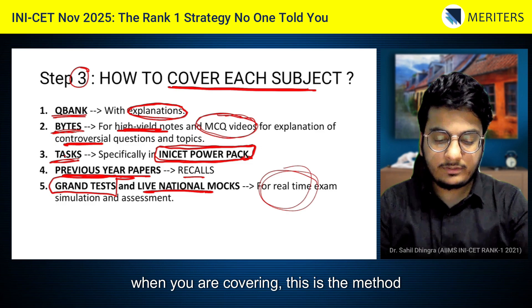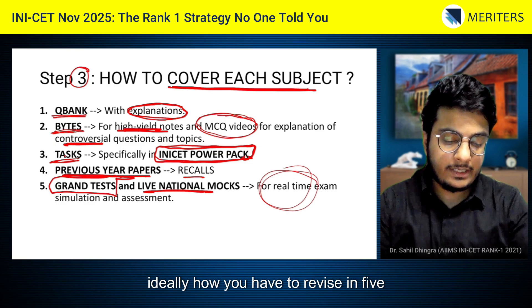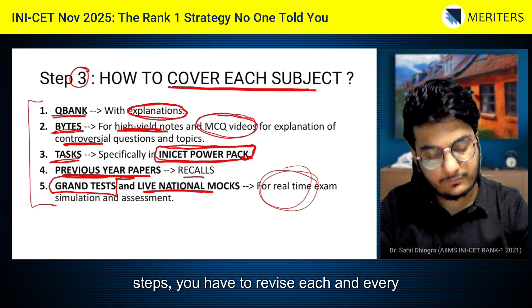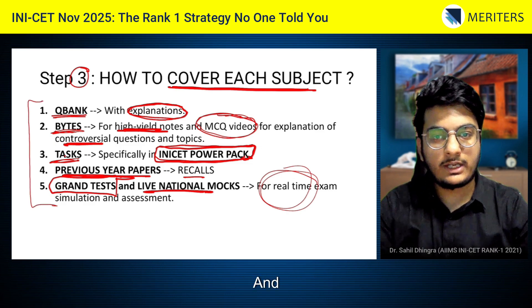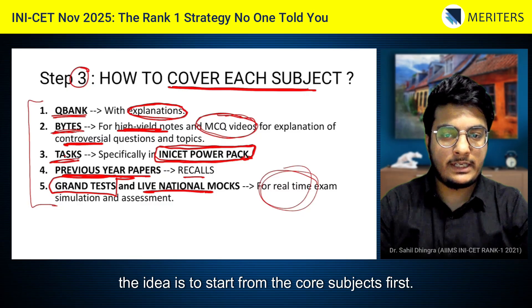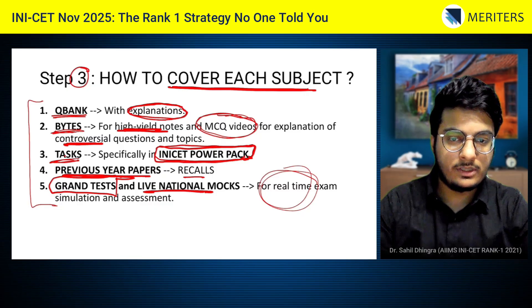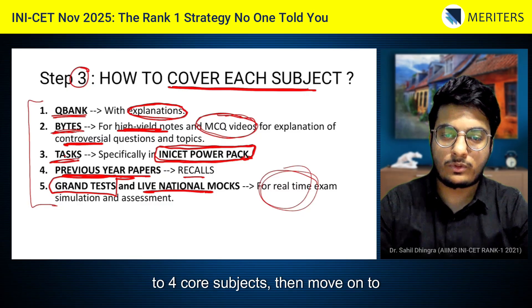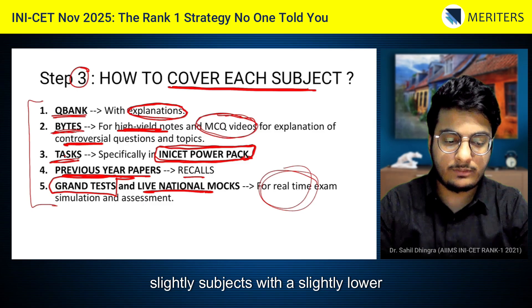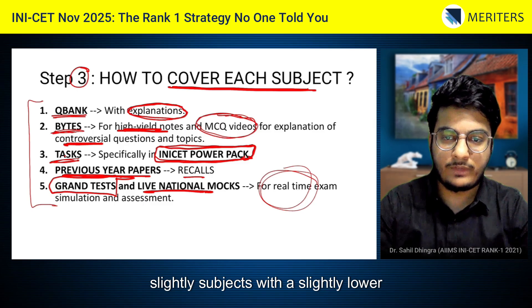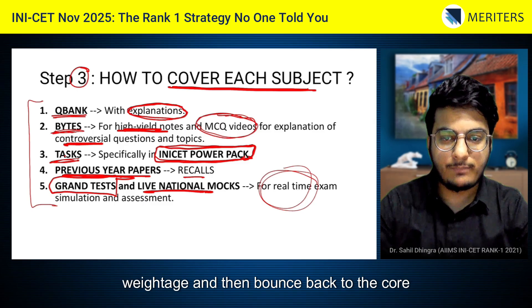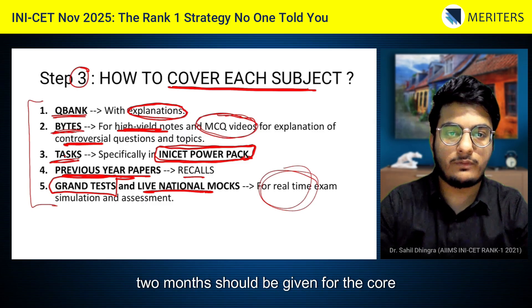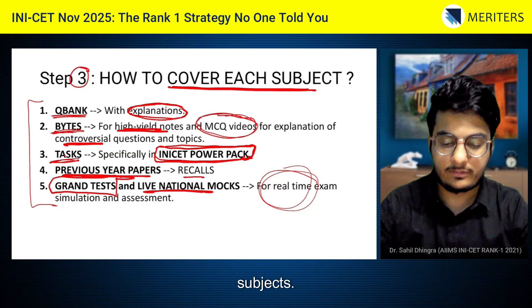This is the ideal method to revise in five steps — covering each subject in order. Start from the core subjects first; in the first month try to cover around three to four core subjects, then move to subjects with slightly lower weightage, and then bounce back to the core subjects, with the goal that around two months should be dedicated to core subjects.